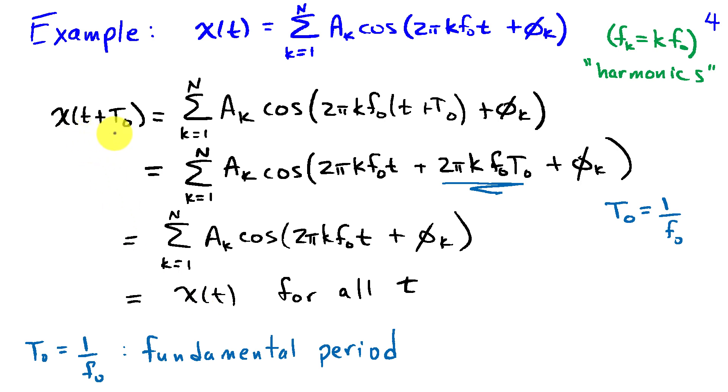So I've shown for all lowercase t, all time, that x of t plus capital T naught is equal to x of t, provided t naught is equal to 1 over f naught. And 1 over f naught is the fundamental period in this case.